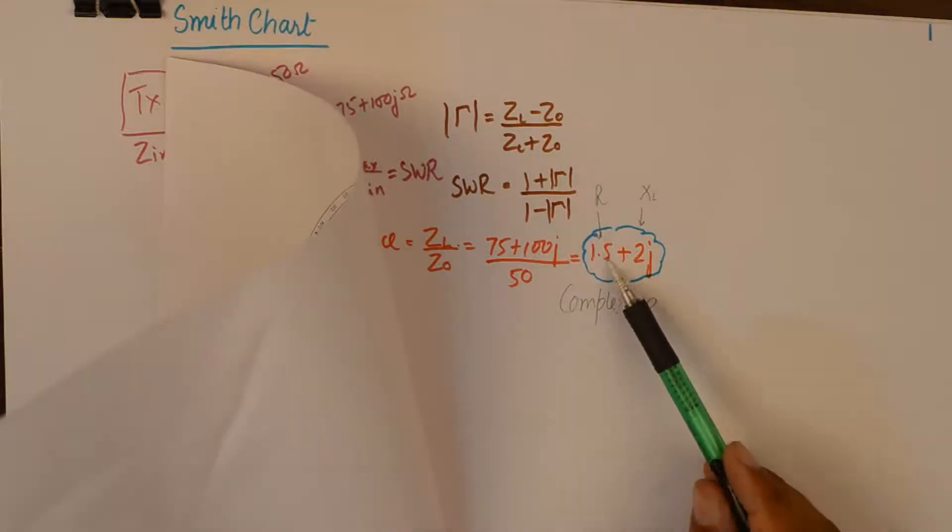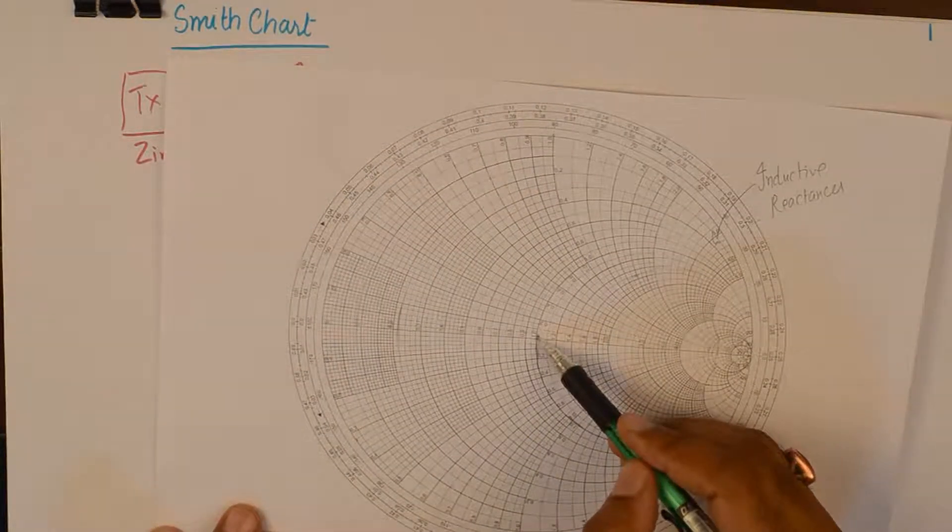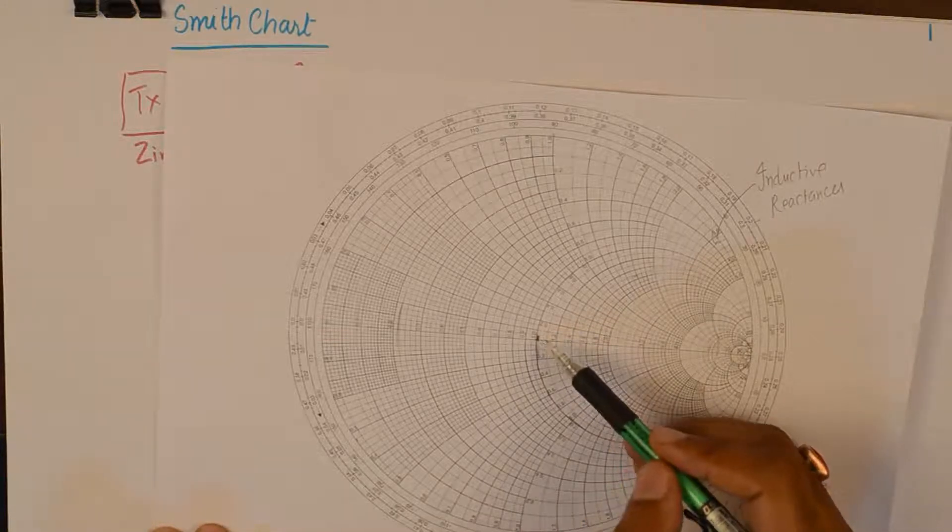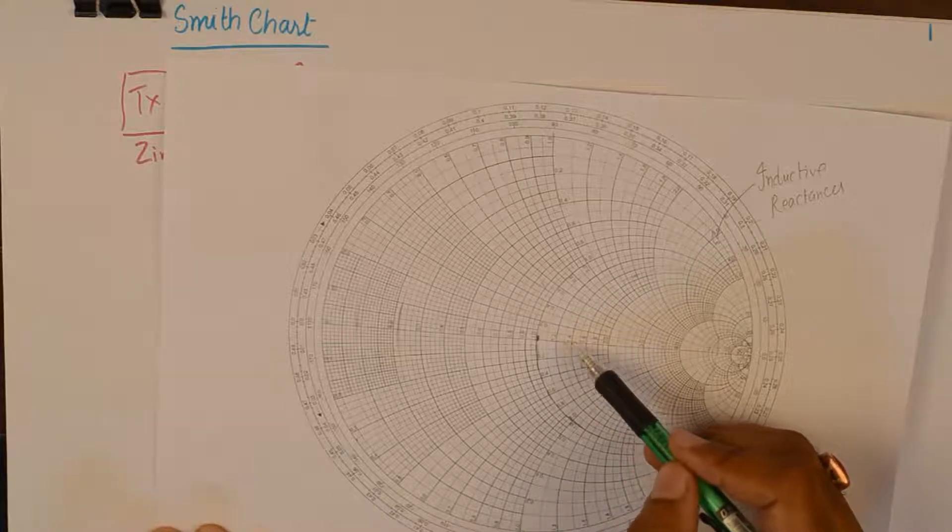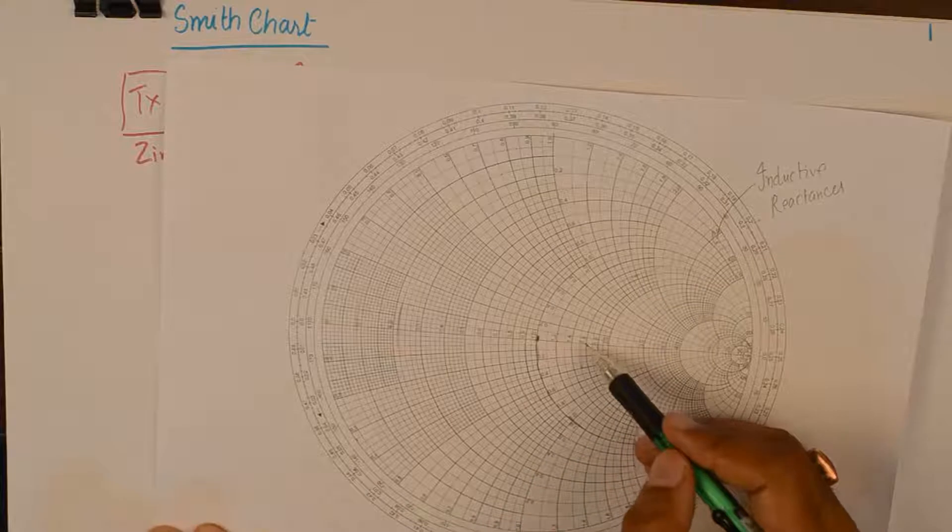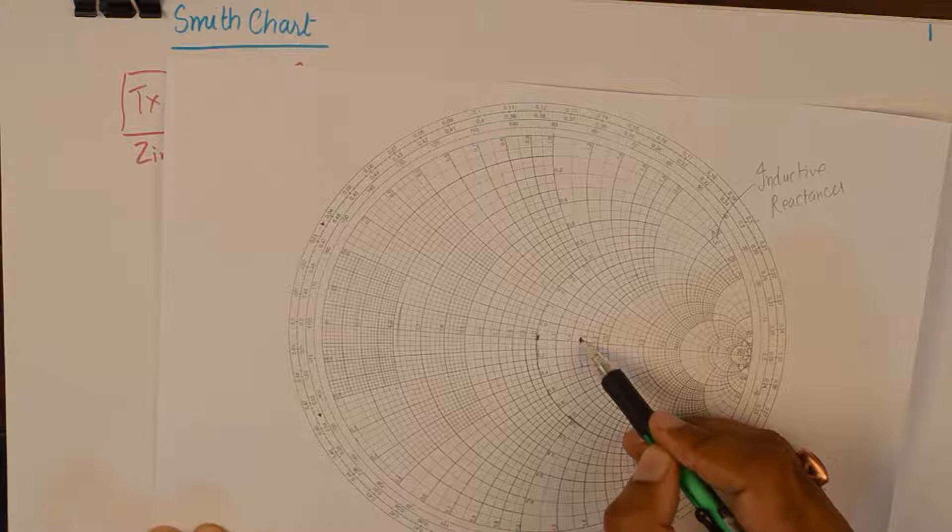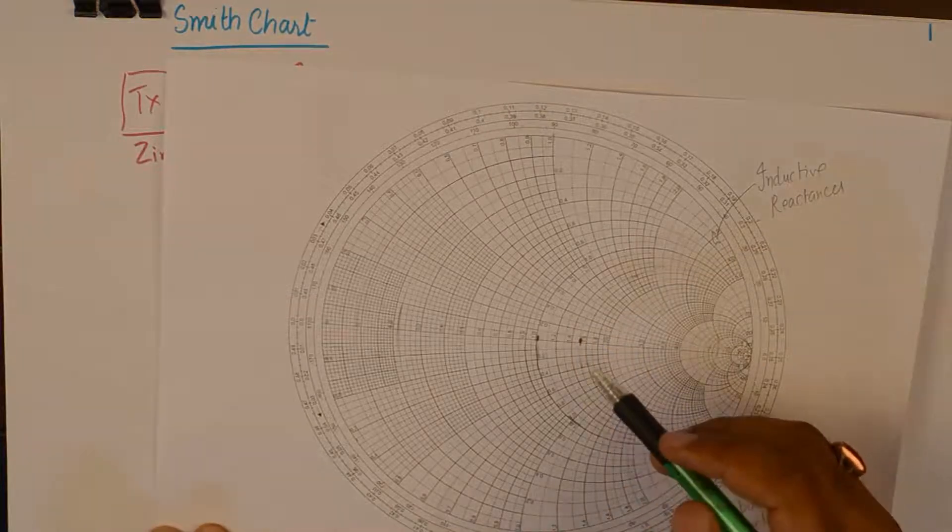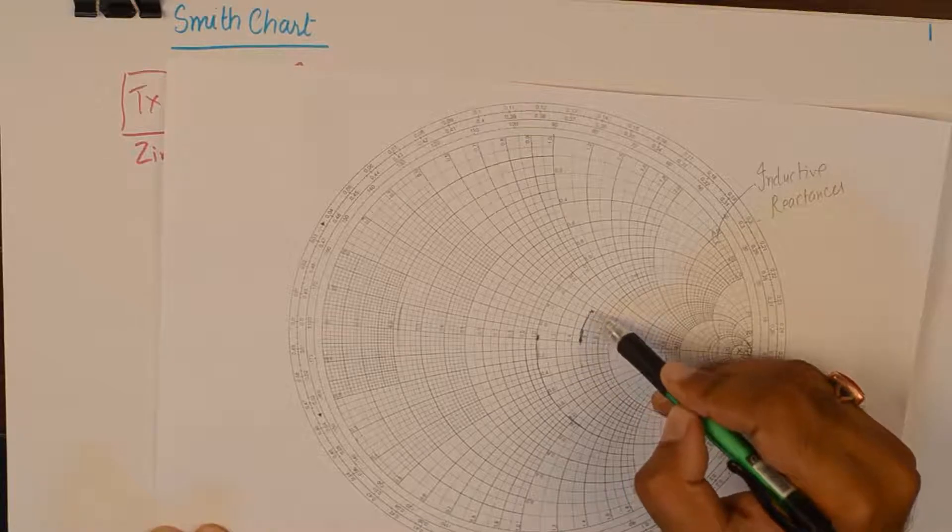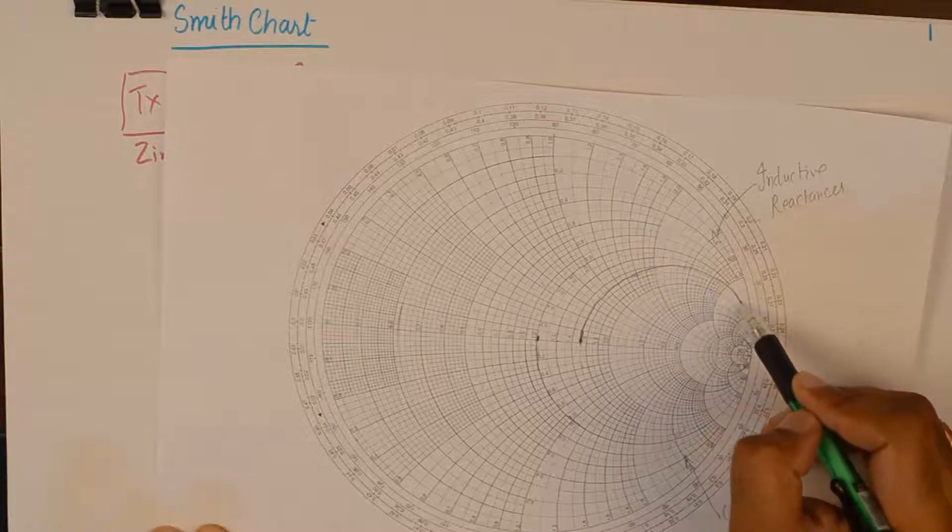Now, we need to plot 1.5. So, 1.5 will be here. The center is 1. The center of the Smith's chart is 1. So, starting from here, this is 1.2, 1.4 and somewhere in the middle, 1.4 and 1.6, somewhere in the middle of 1.4 and 1.6 will be 1.5. So, we will mark that point and we will highlight that circle. And I will tell you in a minute why it is important to highlight the circle.